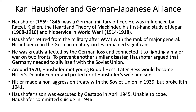Around 1920, Haushofer met Rudolf Hess, who would later become Hitler's deputy Führer and protector of Haushofer's wife and son. Hitler made a non-aggression treaty with the Soviet Union, as mentioned, but having broken that treaty in June of 1941 and having escalated the Second World War into a conflagration and a scale of murder never before seen in recorded human history, Hitler put Germany on the road to total demise and occupation. In the dying days of the Second World War, Haushofer's son was executed by the Gestapo in April of 1945. Haushofer was psychologically unable to cope with this and committed suicide in 1946.